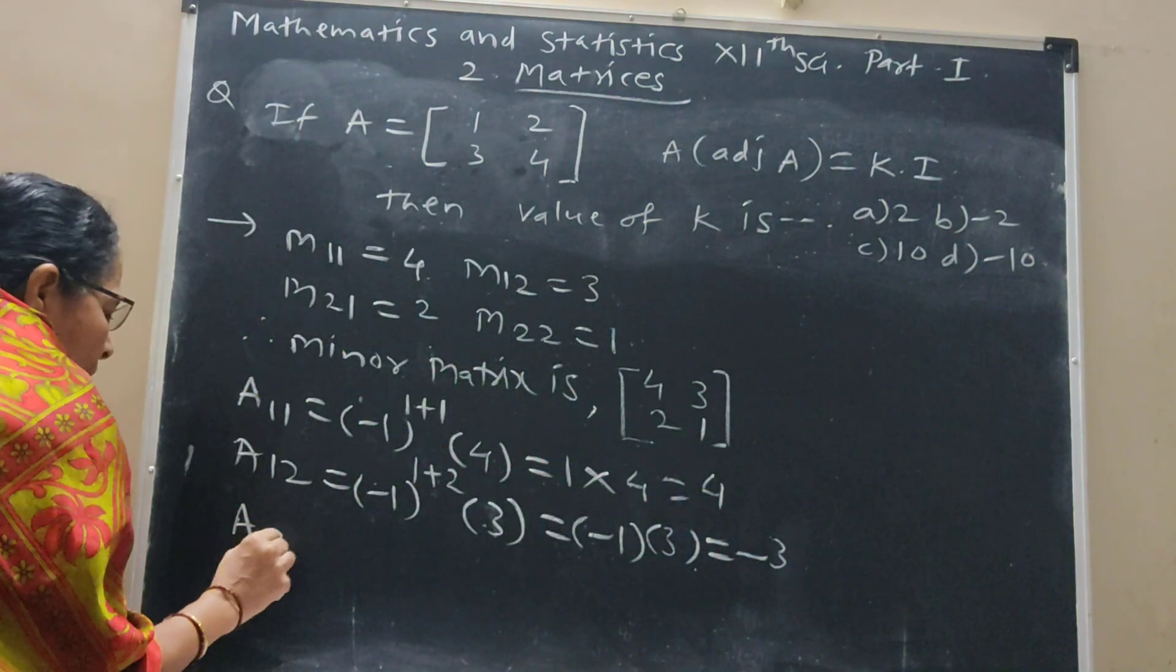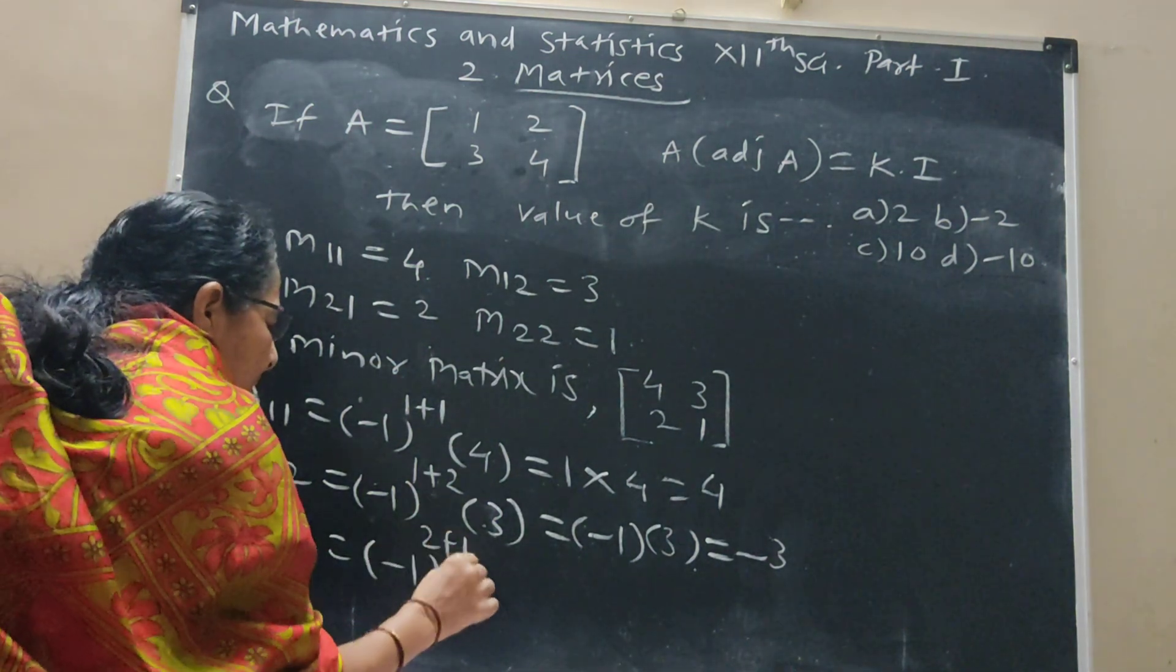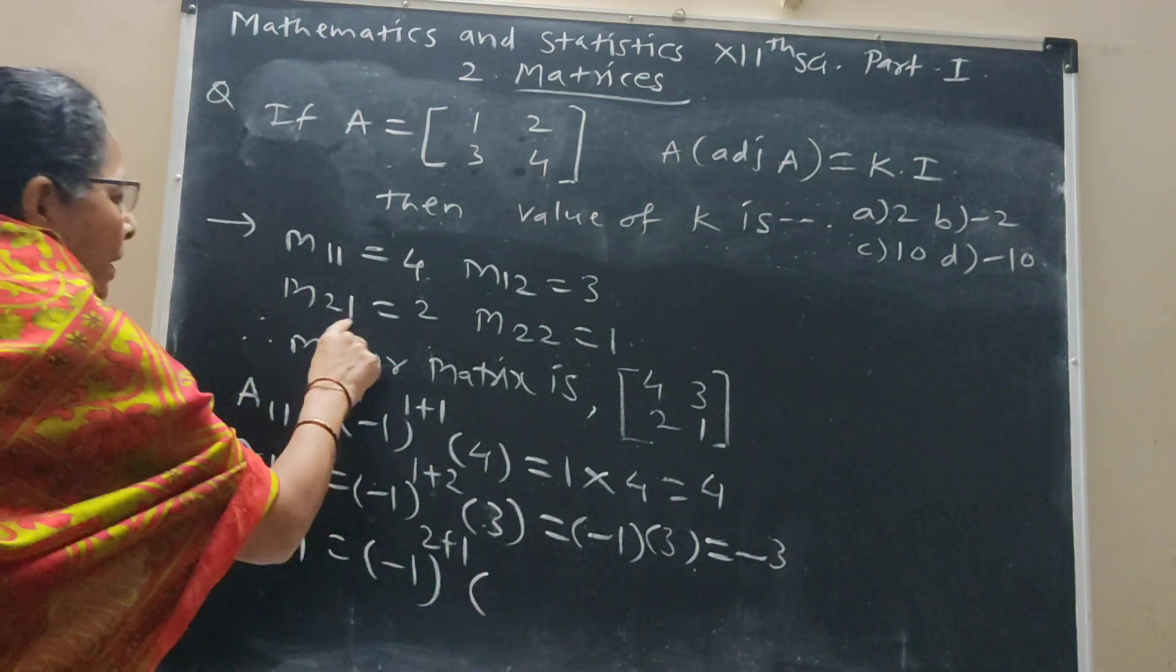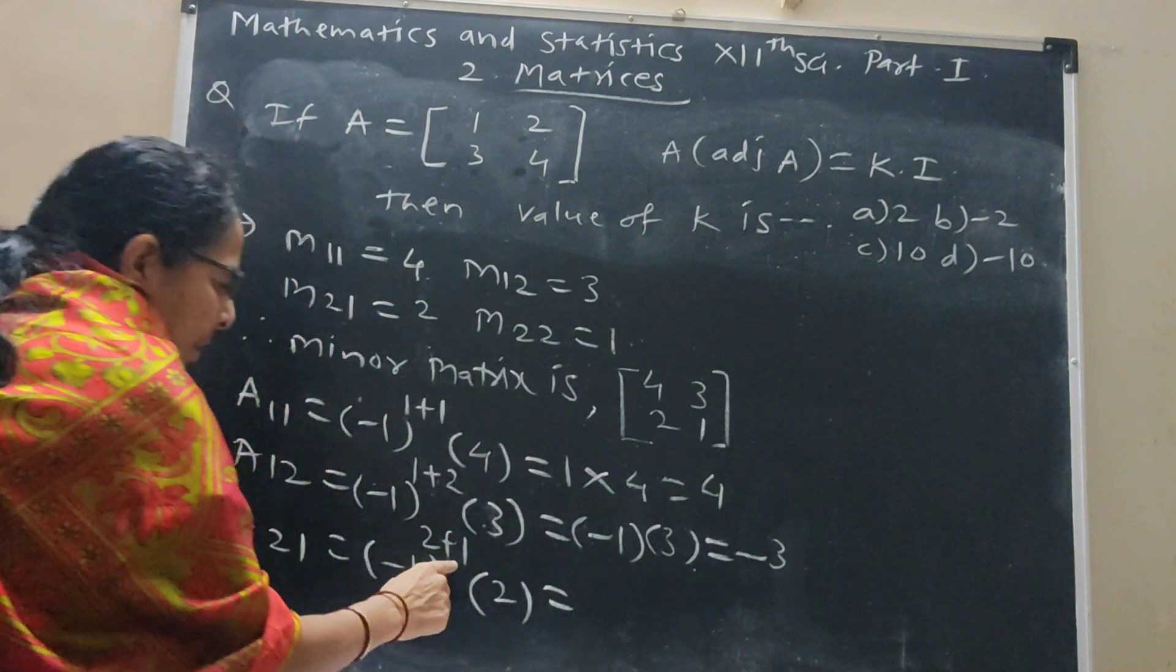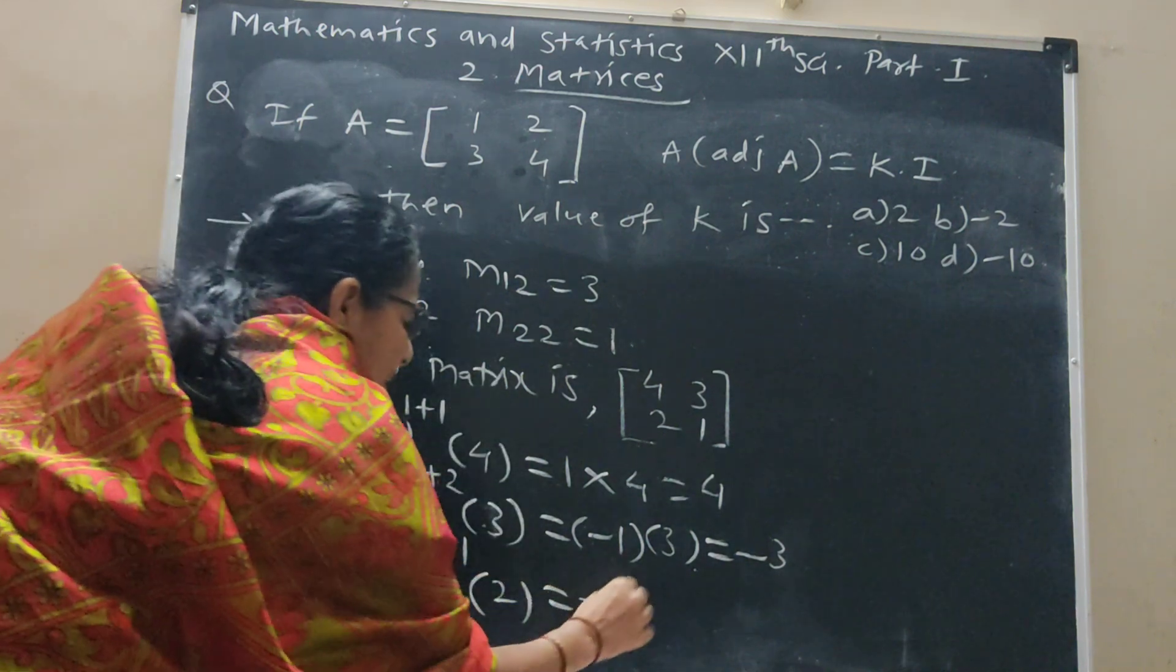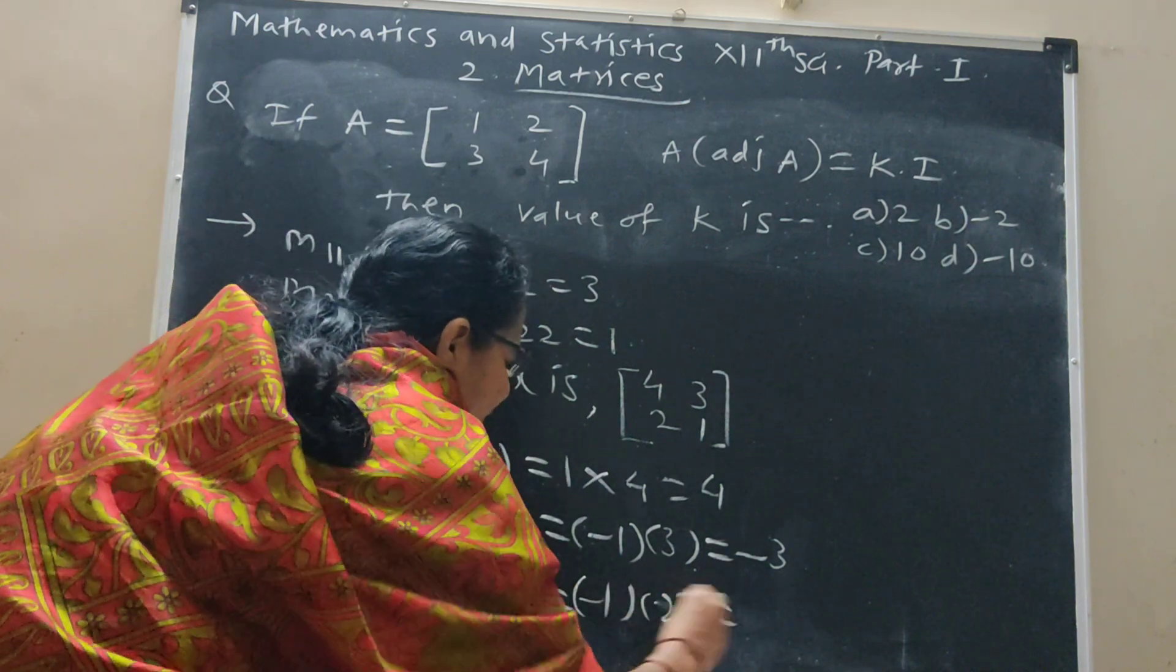A_2,1, (-1) raised to 2 plus 1, with minor 2. Odd power, -1 times 2. Finally, this is -2.